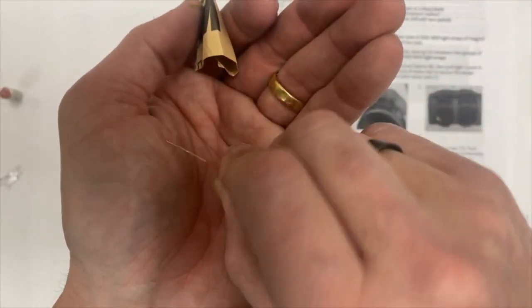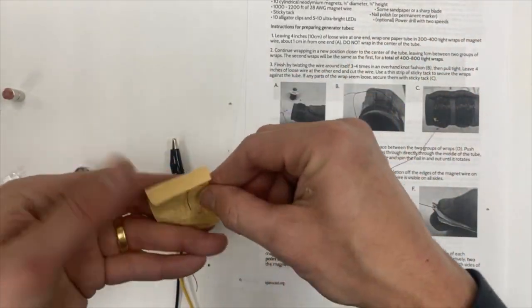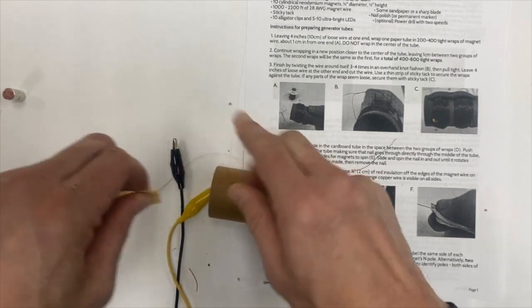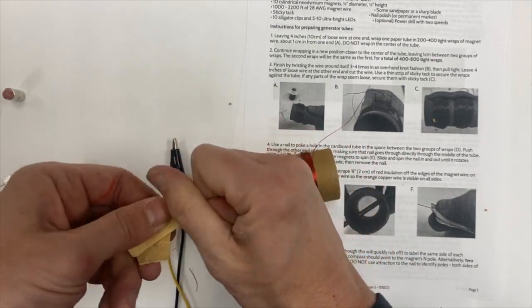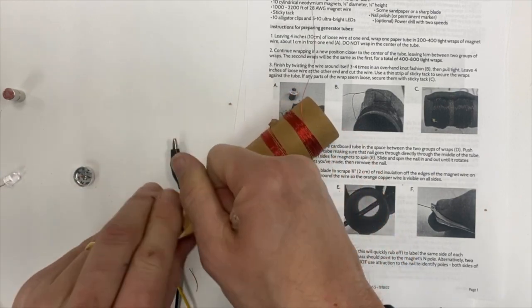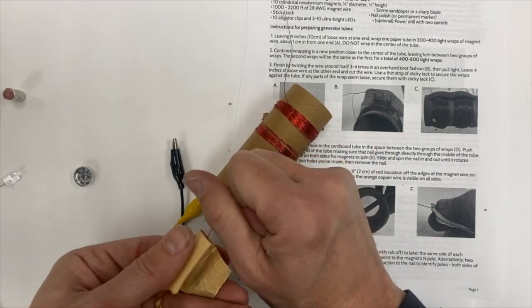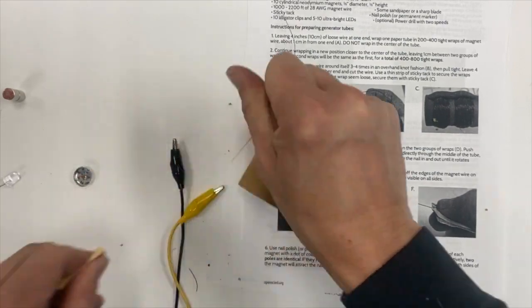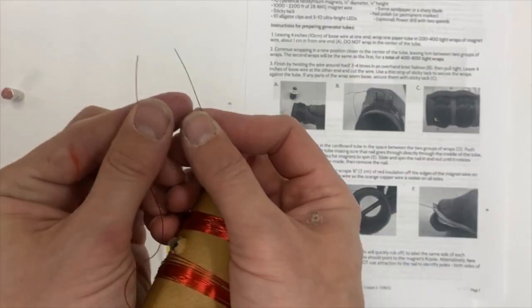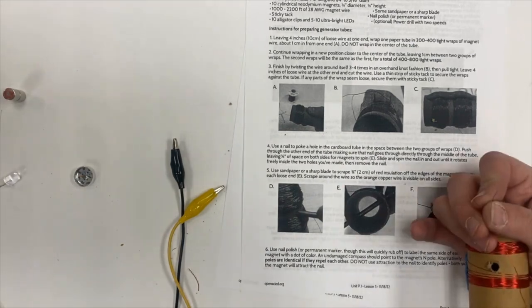It's hard to get all of it, but what you're really trying to do is get enough that you can see the copper. The copper is that lighter orange color, and you're going to do that to both sides of the wire. If you end up breaking the wire here, no big deal. That's why we have four inches or so on either side. It's very brittle wire, so that's okay.